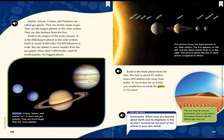Neptune, Uranus, Saturn, and Jupiter, left to right, are gas planets. They are much larger than the rocky planets. Listen to these three details. Earth is the largest of the rocky planets. Earth is nearly 8,000 miles wide. But our planet is much smaller than the gas giants.